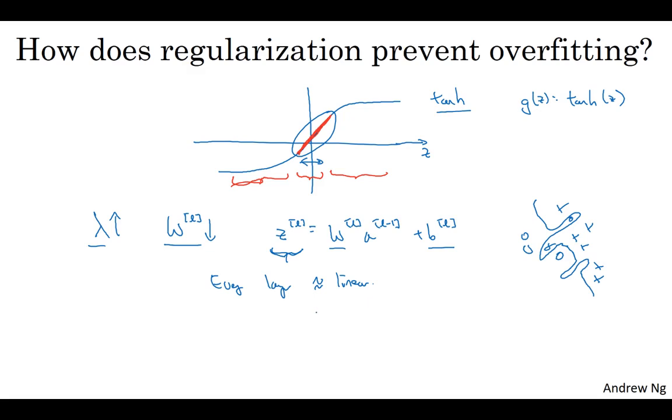And so your whole neural network will be computing something not too far from a big linear function, which is therefore a pretty simple function rather than a very complex, highly non-linear function. And so it's also much less able to overfit. And again, when you implement regularization for yourself in the parameter exercise, you'll be able to see some of these effects yourself.